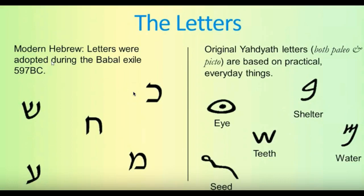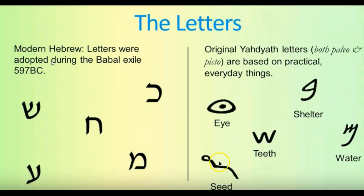The original Yahudiith letters — both the Paleo and the Pictographic, which is even more ancient — are based on practical everyday things that you see. For example, the Bath, the second letter, means house or shelter. The Mem means water. The Shin represents teeth. The Ayin represents eye, see, experience. And the Nun represents seed or life — this is how you see it in the ancient.